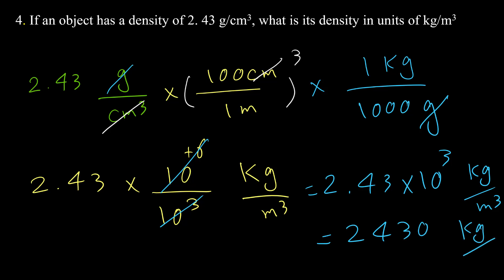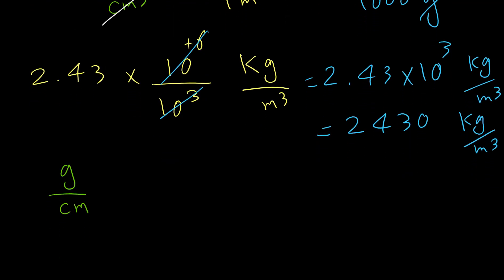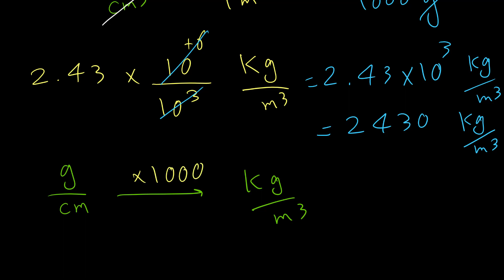To simplify: if you have grams per cubic centimeter and want to convert to kilograms per cubic meter, multiply the density by 1000. To do the opposite conversion, divide by 1000.